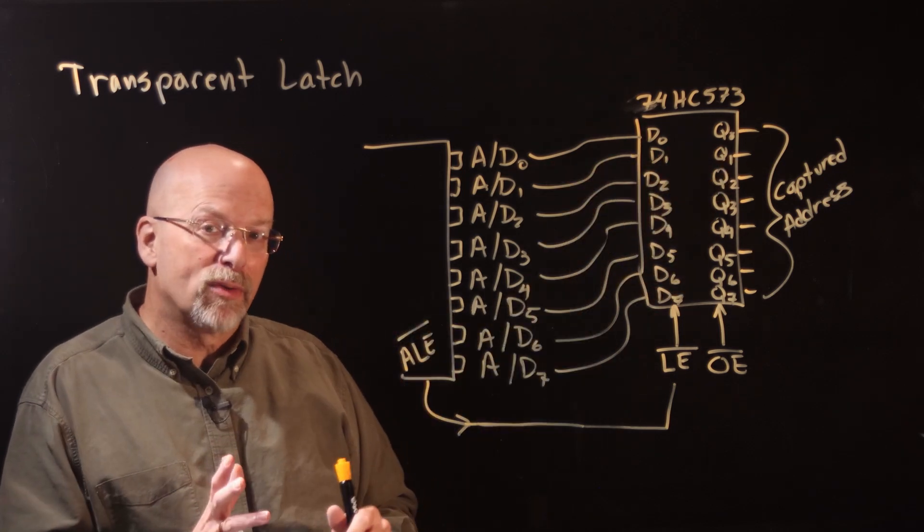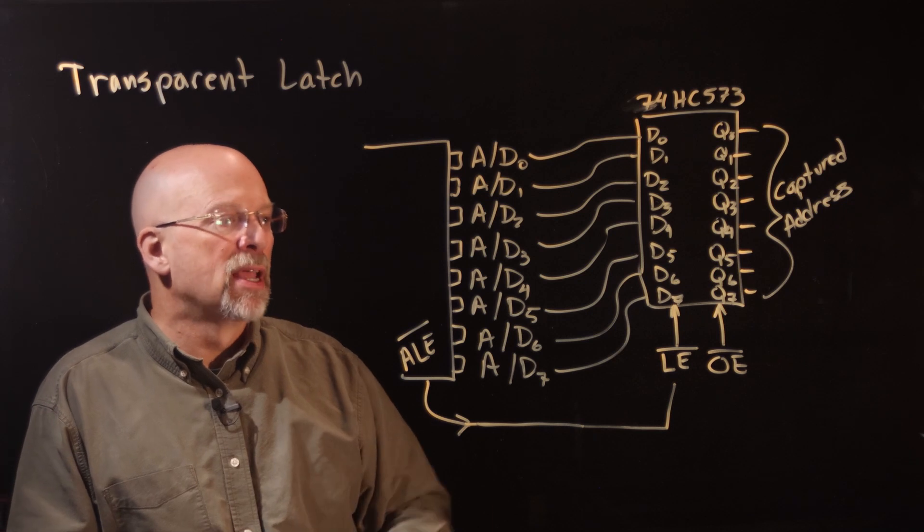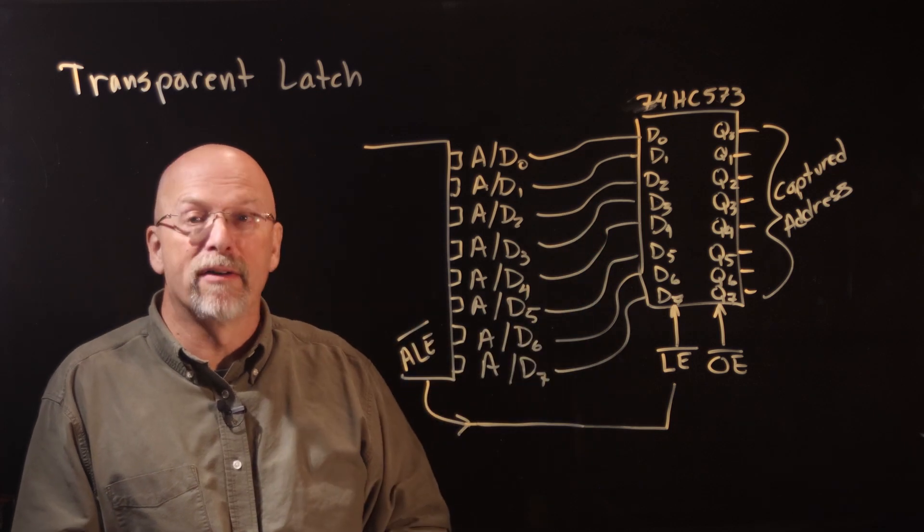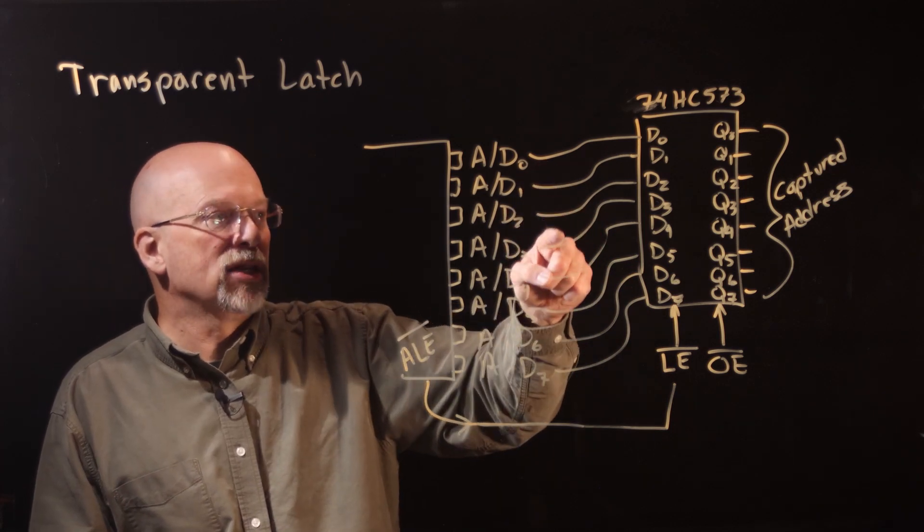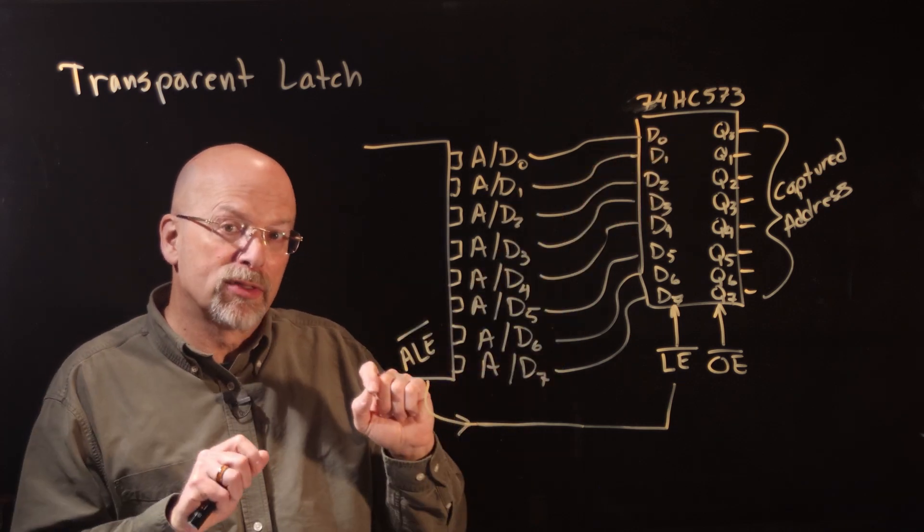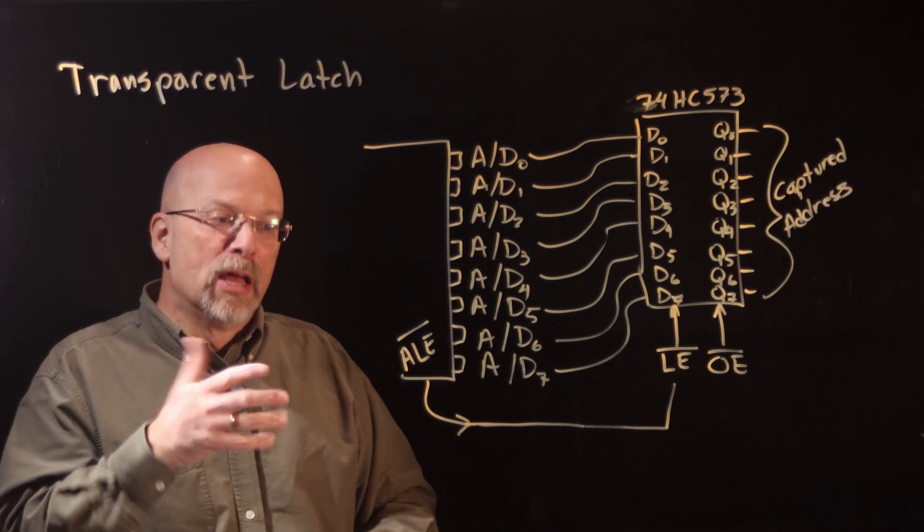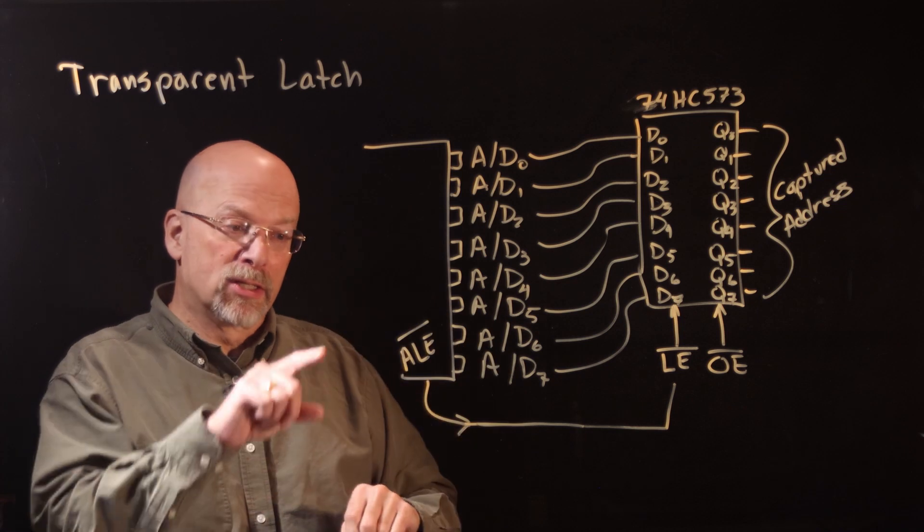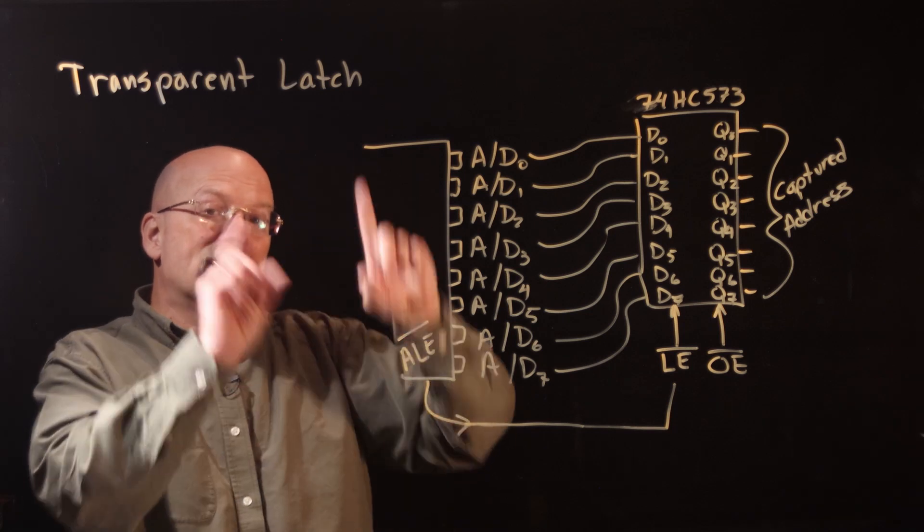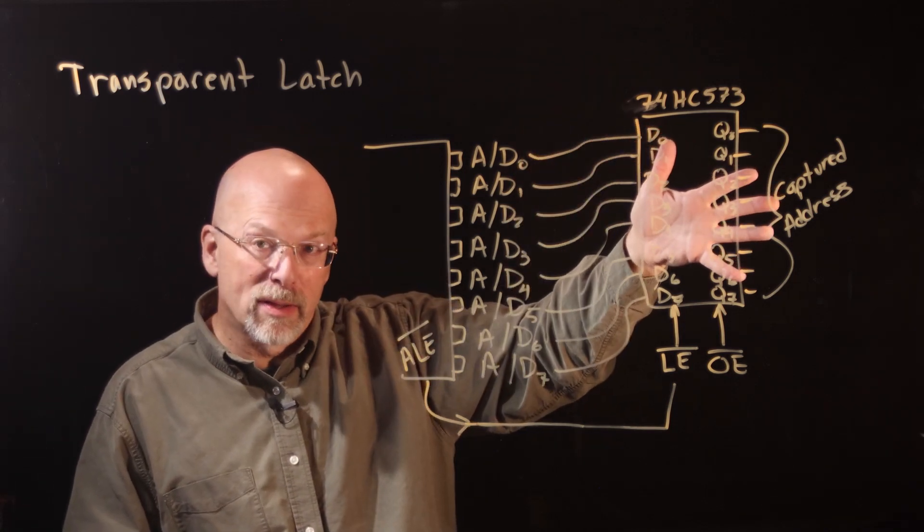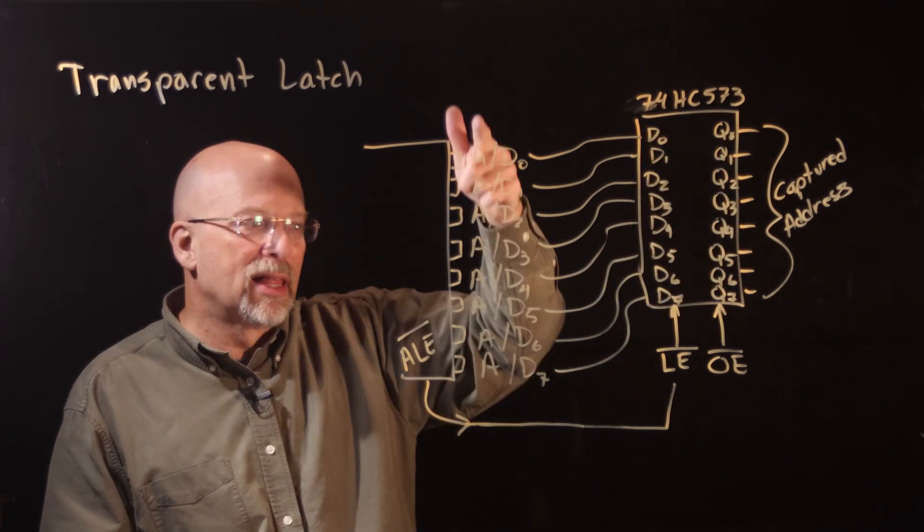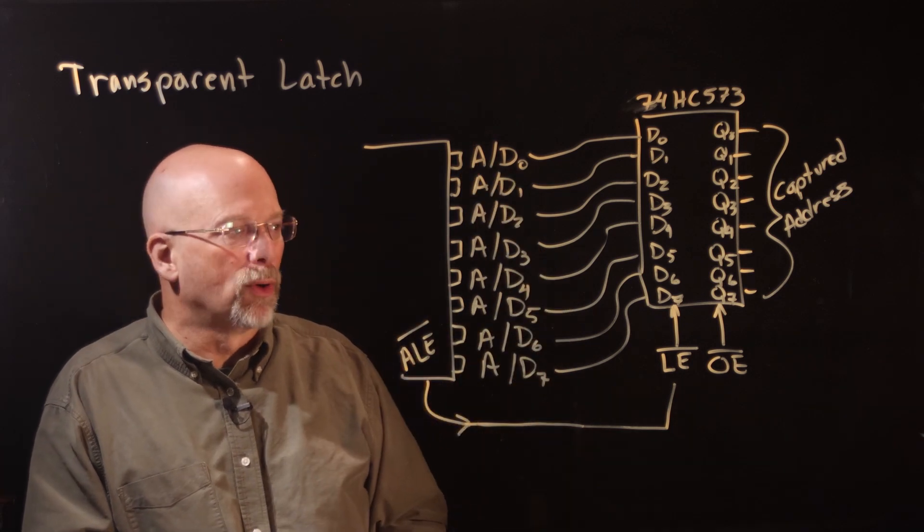So these guys, these data lines, could also then be passed off to the data inputs of the memory device. And so you would actually have these wires split, one copy going off to the latch transparent latch, another copy going off to the data line of the memory device. And so the processor, once again, puts address on the pins, brings address latch enable low, that address goes straight through. Then it brings address latch high, that address is captured or held on this transparent latch, and then the functionality of the data went back and forth between the memory.